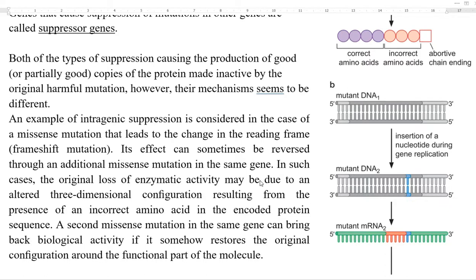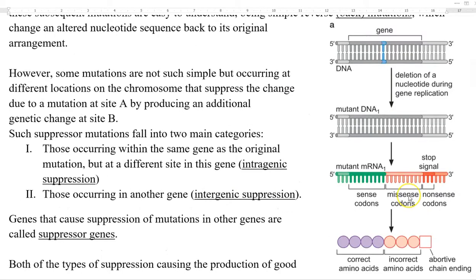This second missense mutation takes place in the same gene and can bring back the biological activity partially — or fully, depending on the type of mutation caused. In this diagram, I will explain the intragenic suppressor mutation taking place in a gene.